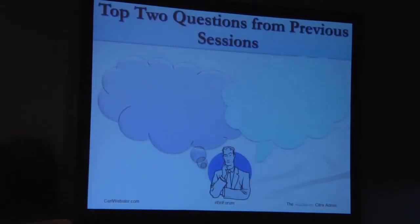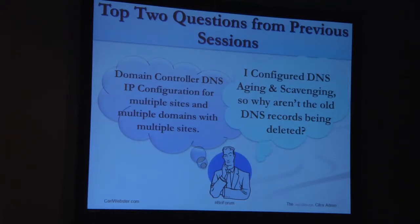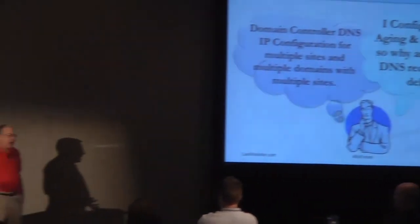From those 10 things, I got lots of questions centered around two things. First: 'Hey Webster, you talked about domain controller DNS IP configuration for a single domain, single site — but I've got a single domain with multiple sites, or multiple domains with multiple sites. How should my domain controllers be configured?' Second: 'I configured DNS aging and scavenging and none of the records were deleted. Or I found a command on Google, and the next day almost every record in DNS was missing. My boss was pissed.'